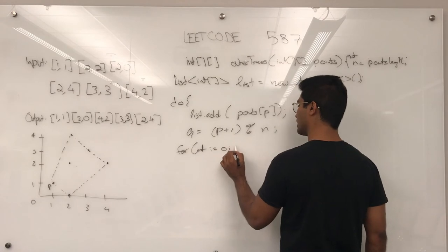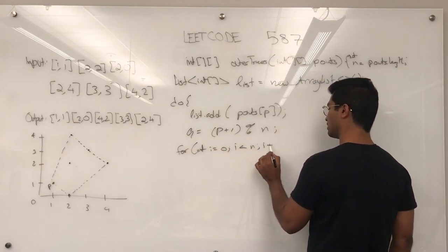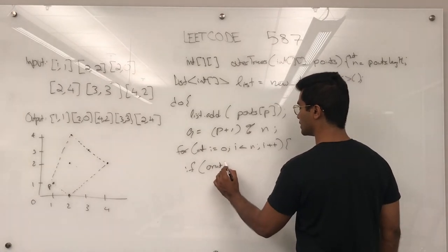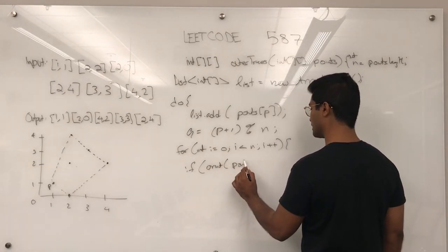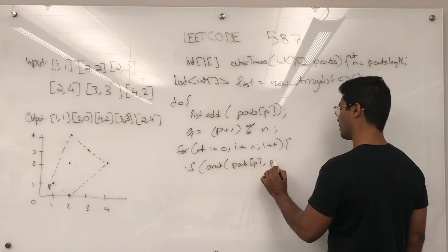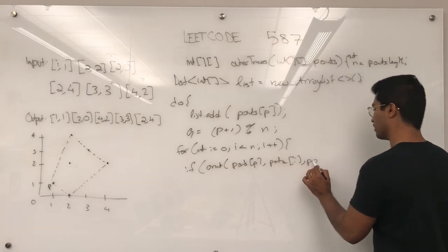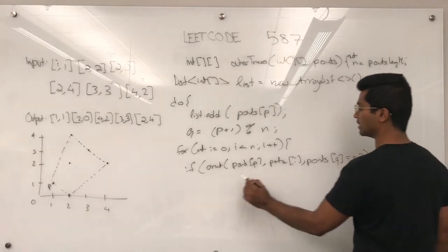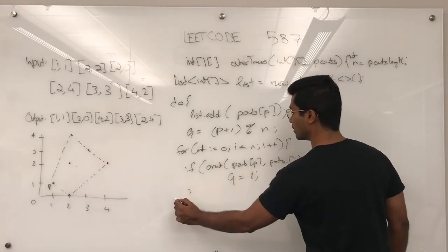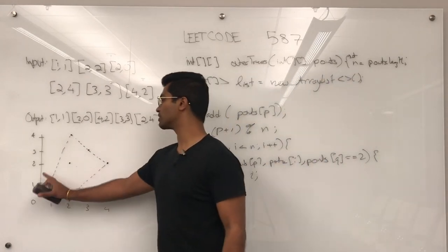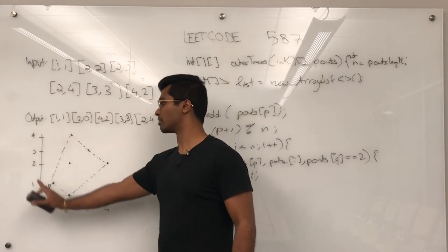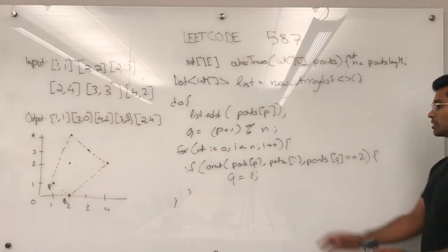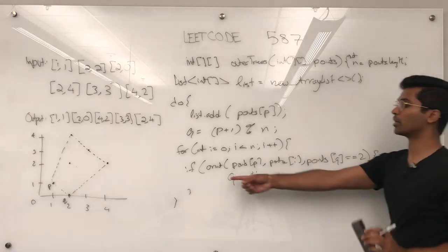For int i equals 0, i is less than n, i plus plus. If the orientation of points of p, points of i, points of q is going to be equal to 2, then q is going to be set to i. What this does is it checks what is the most counterclockwise point on this whole thing and ends up being this q right here. So, that's what this guy is going to take care of. This is the orient function I wrote earlier.